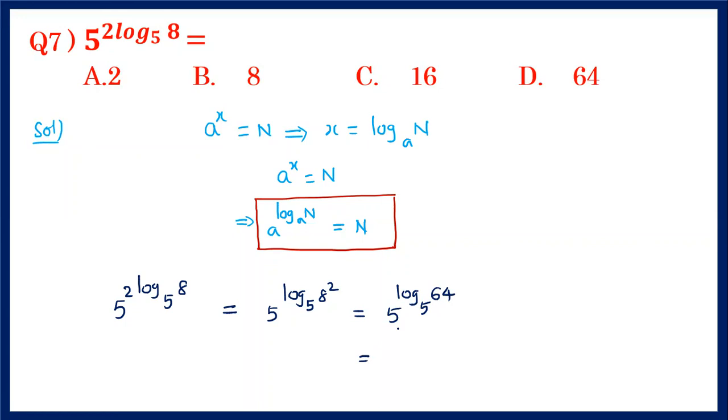If you observe this, 5^(log₅64) is the same pattern, which equals 64. Therefore, 5^(2log₅8) is equal to 64.